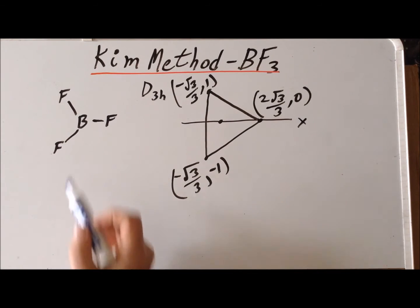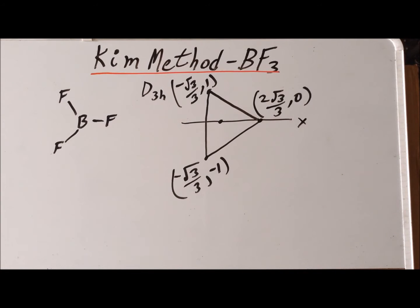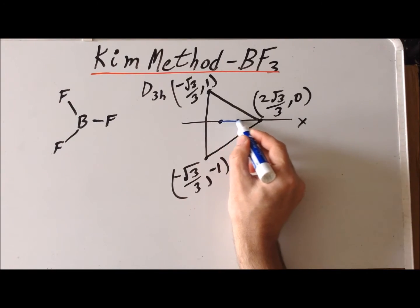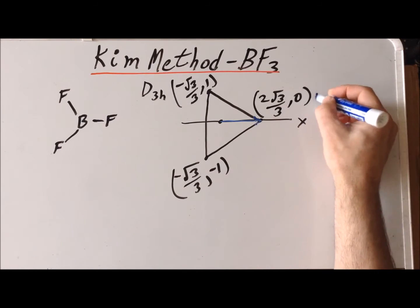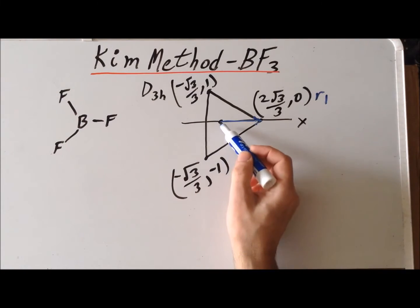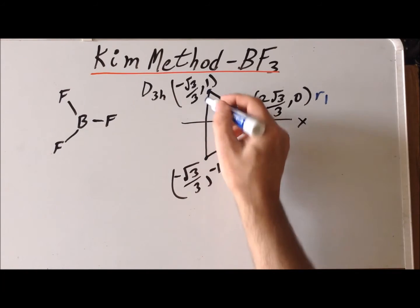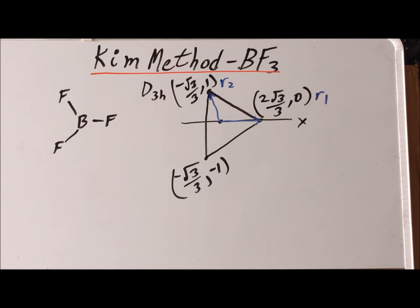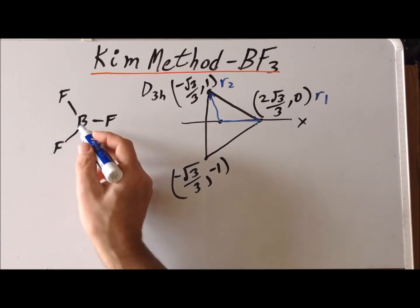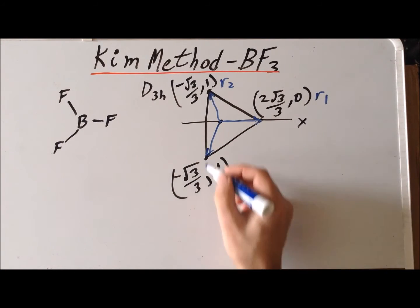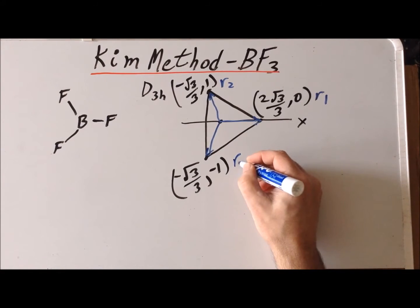Next, we think of the bond connecting boron to a particular fluorine atom as a vector directed from boron to the fluorine. So our first boron-fluorine bond we can think of as a vector going from the origin to this particular point, and we'll call that R1. Similarly, we can think of the second boron-fluorine bond as a vector going from the origin to this particular point, which we will label R2. And completing the idea, the third boron-fluorine bond is a directed vector ending at this particular point, and we'll label that as R3.